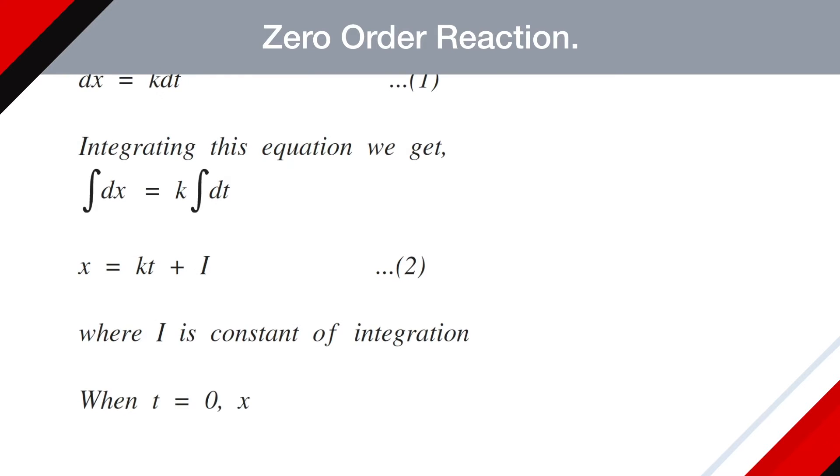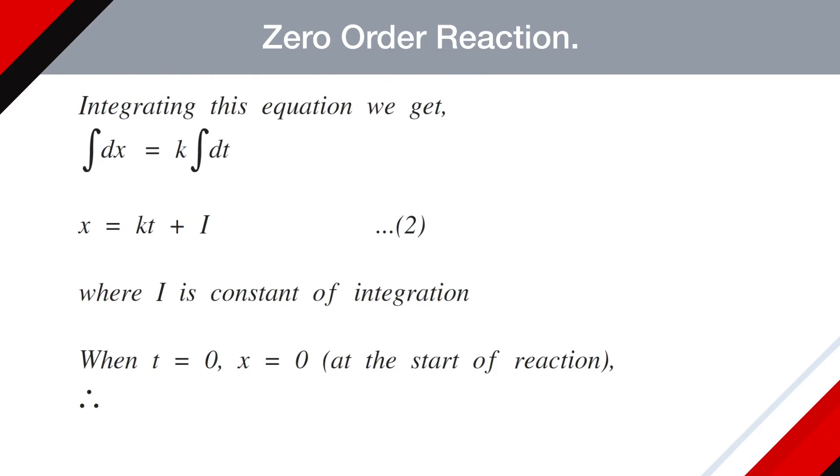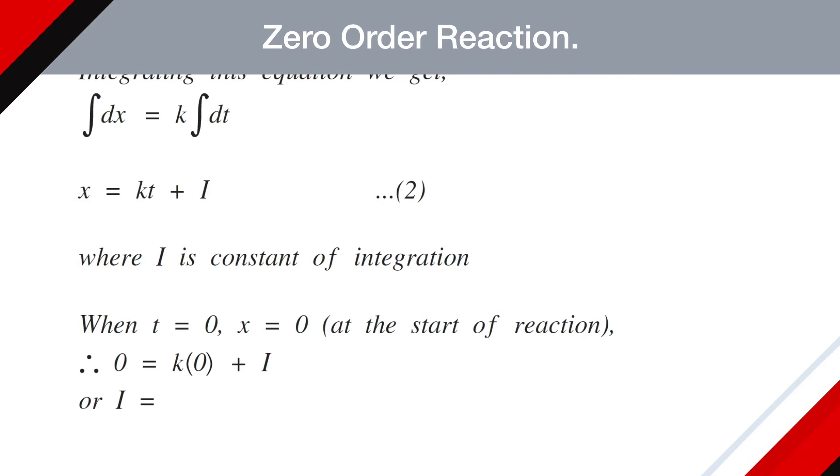At the start of the reaction when T equals zero, X is also zero. Therefore, zero equals K times zero plus I, or I becomes zero. This is equation number three.